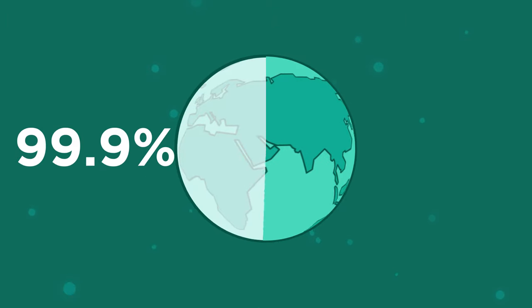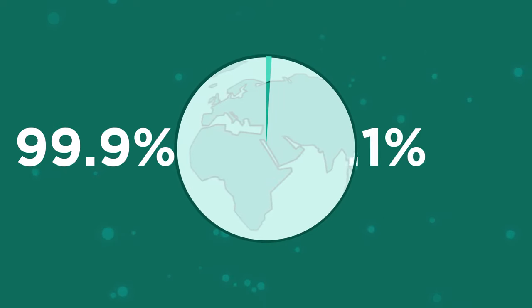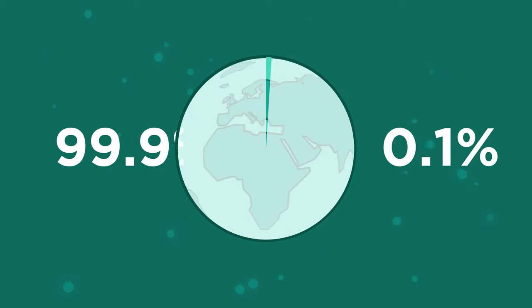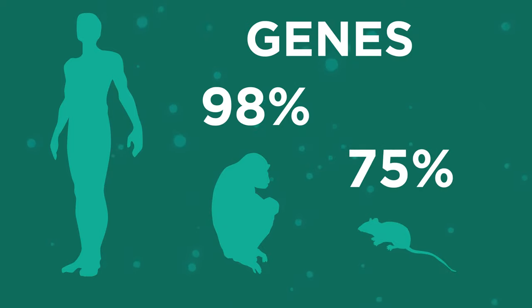The genome of every person on earth is 99.9% the same. It's that tiny 0.1% that makes up genes that give us our unique differences. In fact, our genes are 98% similar to a chimpanzee's and 75% the same as a mouse.